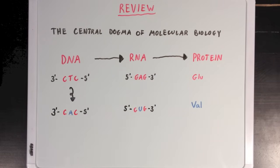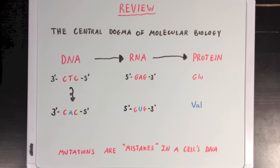So we say that mutations are mistakes in a cell's DNA that ultimately lead to abnormal protein production. So what are the different types of mutations?